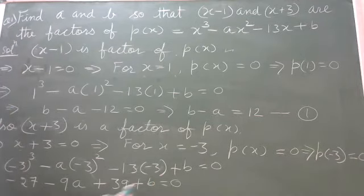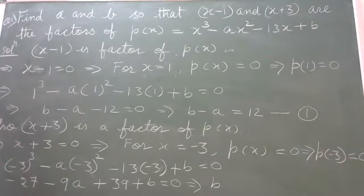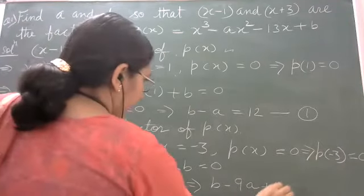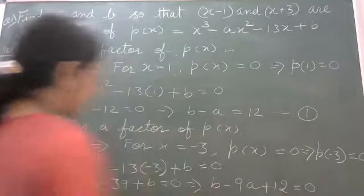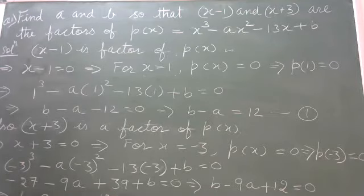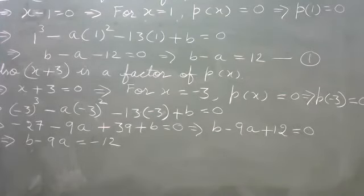Further solving: b minus 9a plus 12 equals 0, which implies b minus 9a equals minus 12. Let this be equation number 2. Now we have two equations: equation 1: b minus a equals 12, and equation 2: b minus 9a equals minus 12.